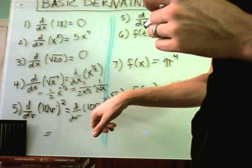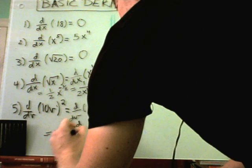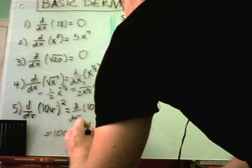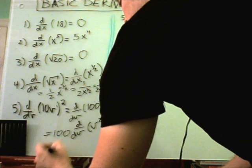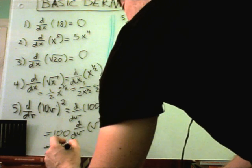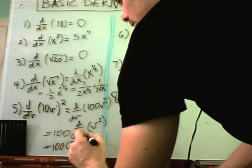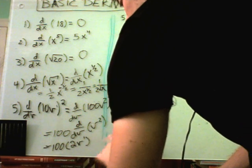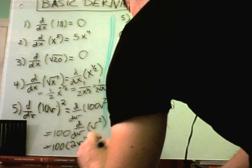There's a rule that says if you have a number being multiplied by a variable term, you can pull the number out front and simply take the derivative of the variable portion. So the derivative of v squared, the two comes out front, leave the v alone, take one away to the first power.